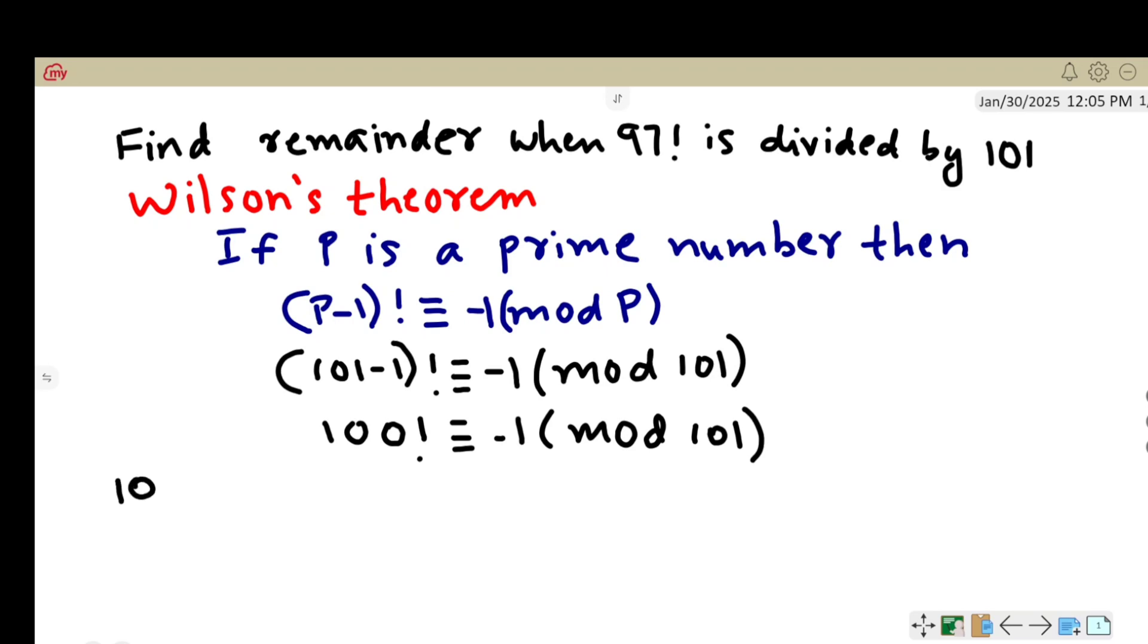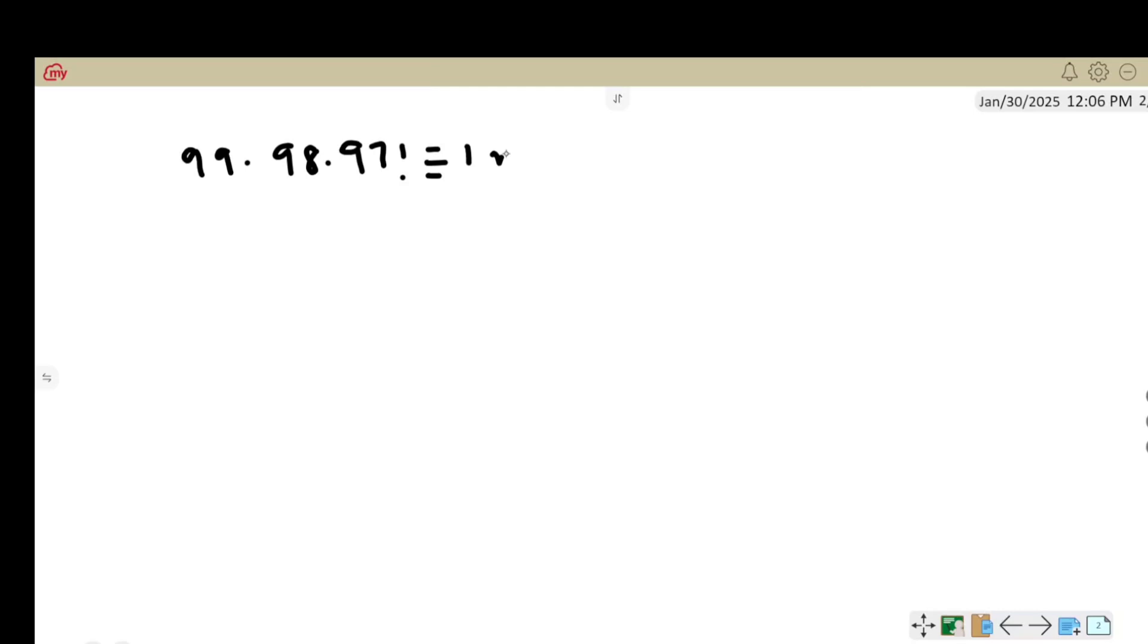We can write 100 factorial as 100 times 99 times 98 times 97 factorial, which is congruent to minus 1 mod 101. Dividing both sides by 100, it becomes 99 times 98 times 97 factorial congruent to 1 mod 101.